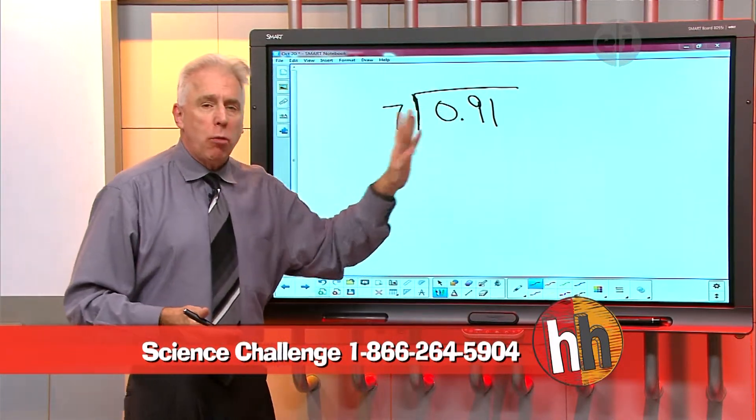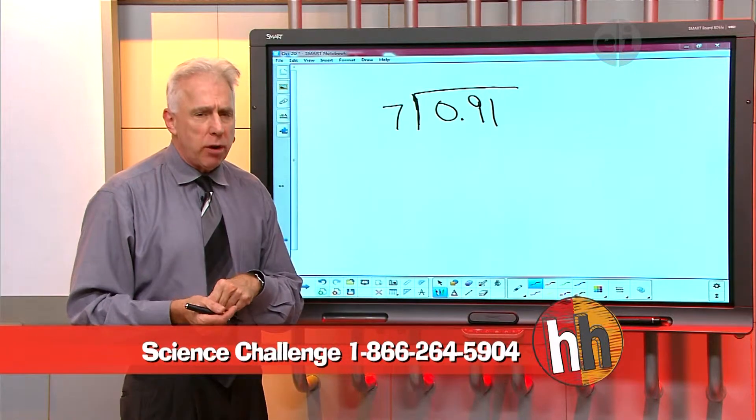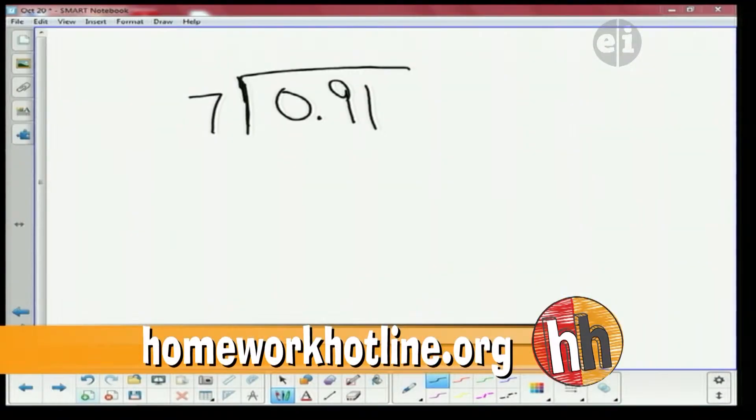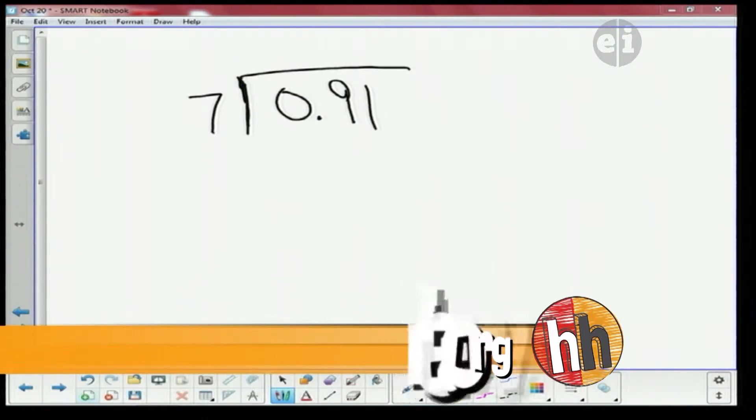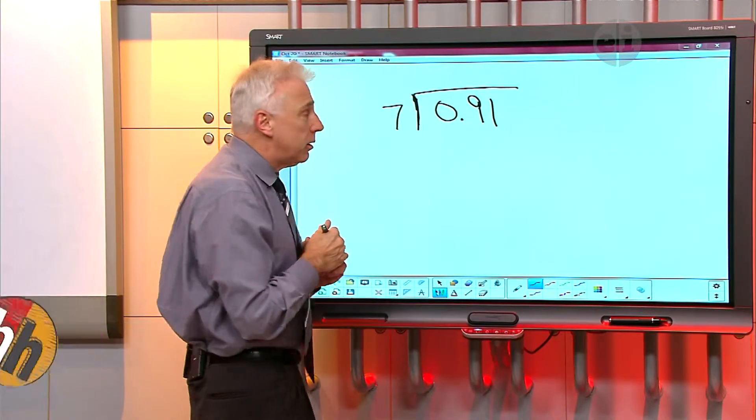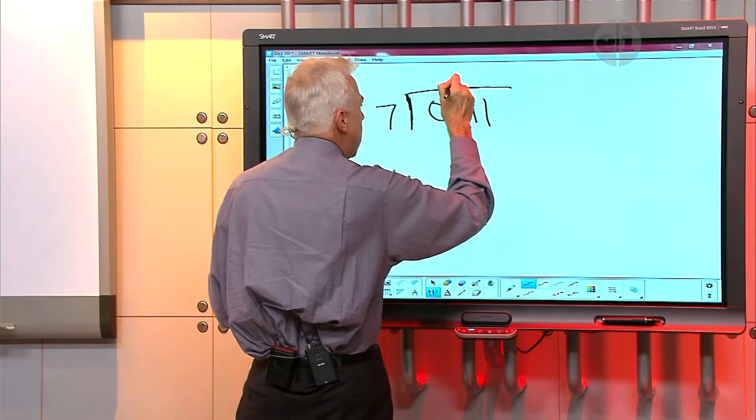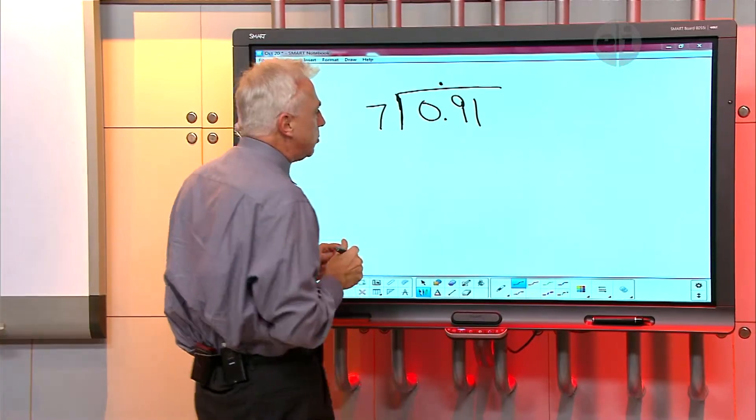Up in the answer area, where should we put the decimal point, Thomas? We should put the decimal point in between the zero and... And then between the zero and what? And 91. Very good. So what I'm going to do is I'm going to line up the decimal point.